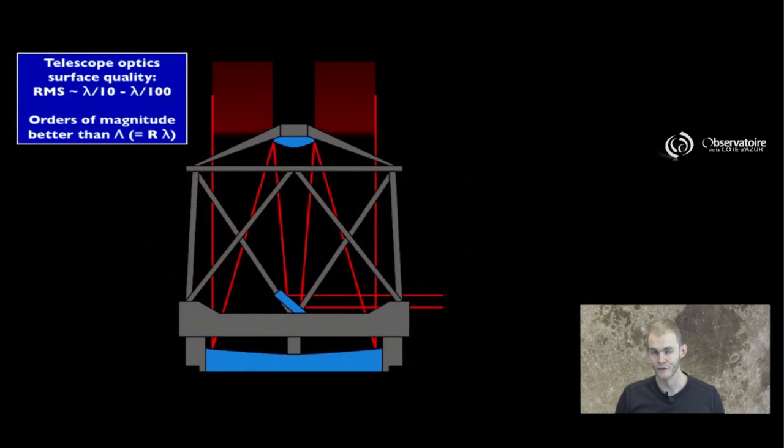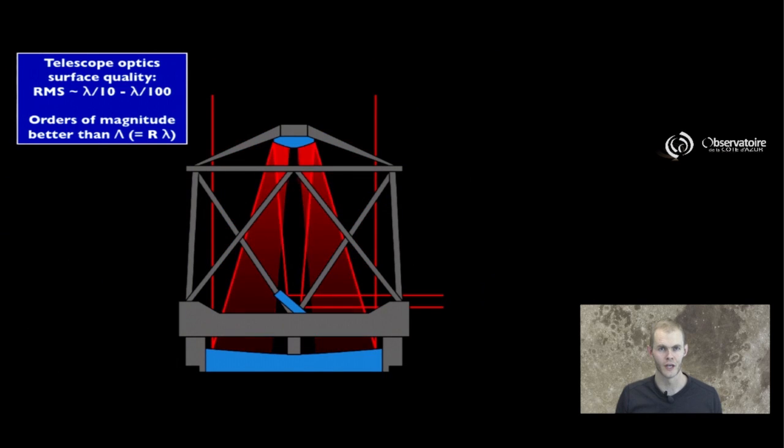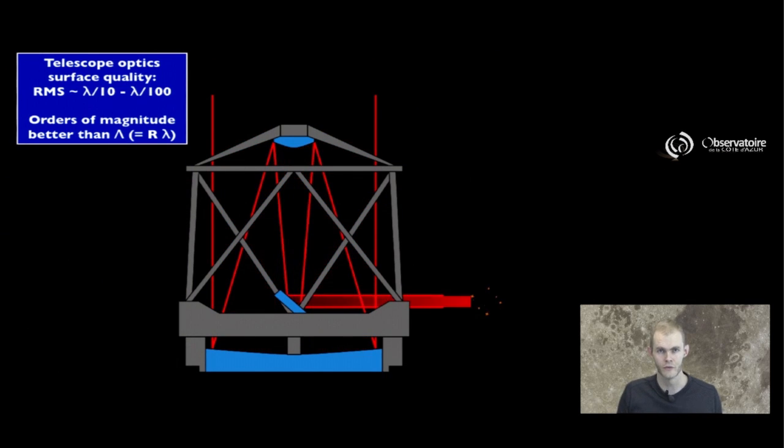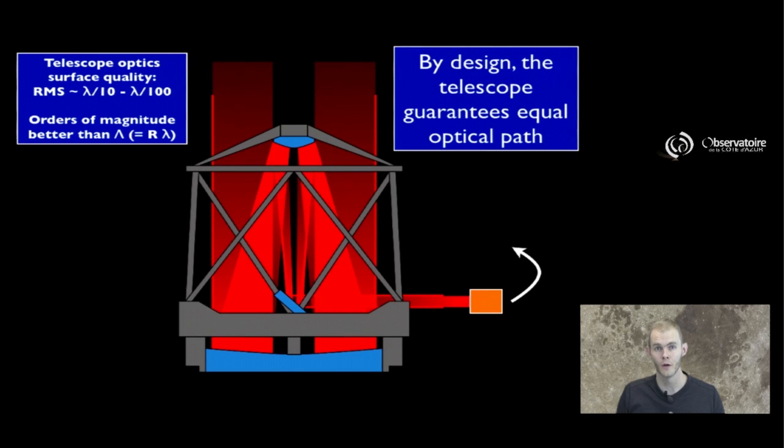In fact, if you look at most specifications for the optics that are used in everyday astronomy, you realize that the optical surface quality, the typical roughness errors on the surface of the optics, is typically somewhere between lambda over 10 to lambda over 100. That means that the typical errors are smaller than a tenth of the wavelength or even a hundredth of the wavelength in the most demanding cases.